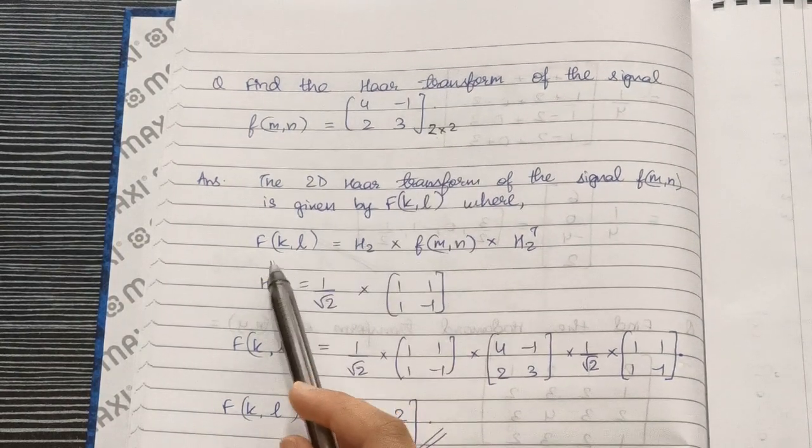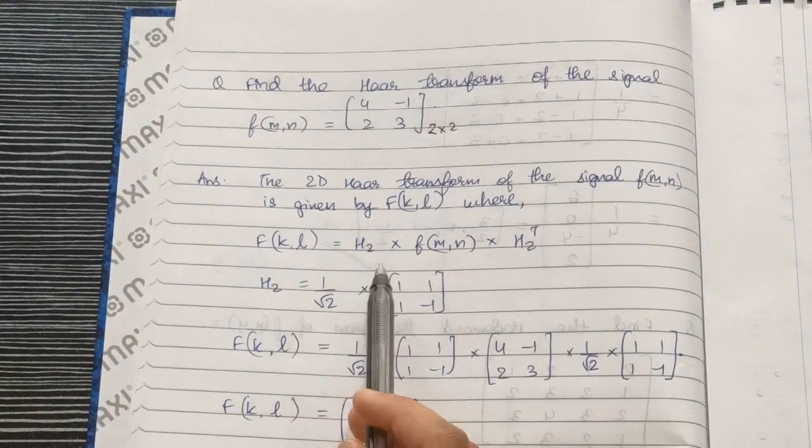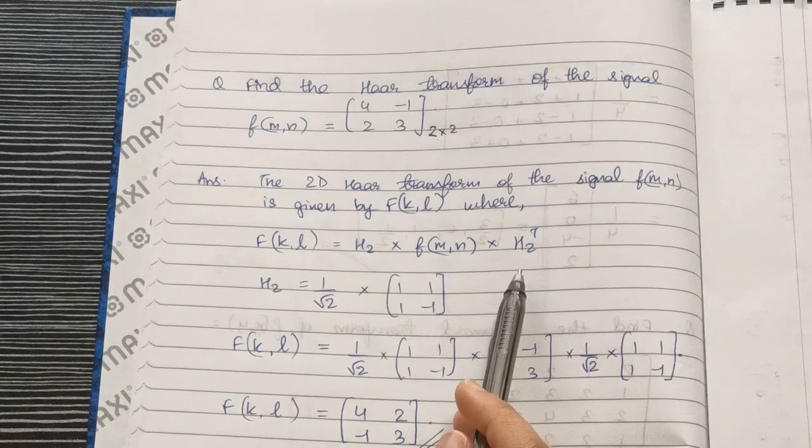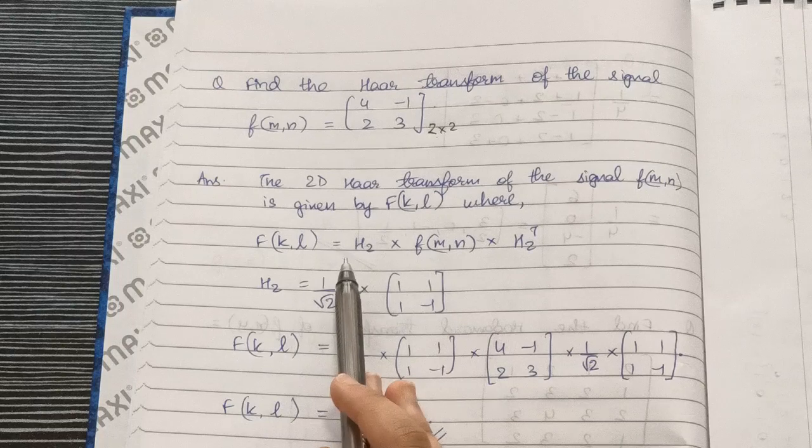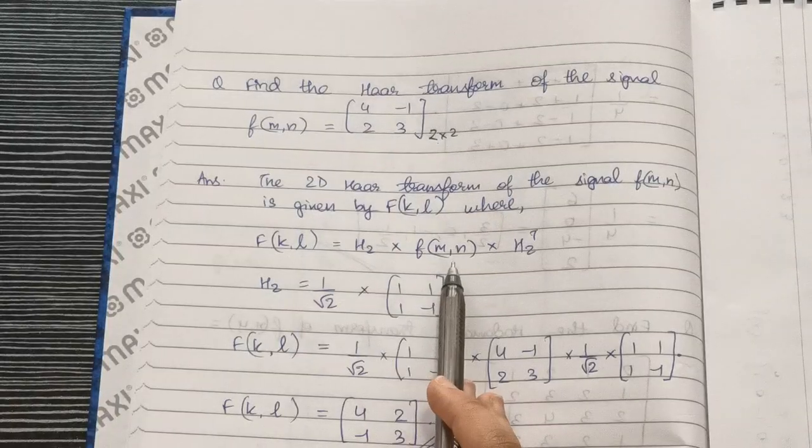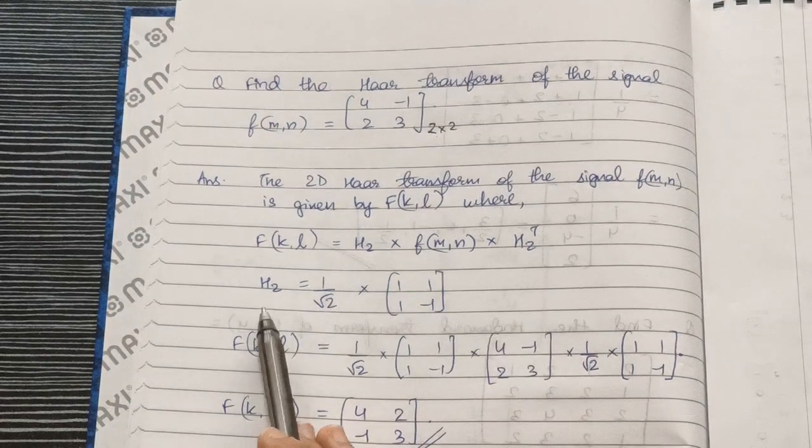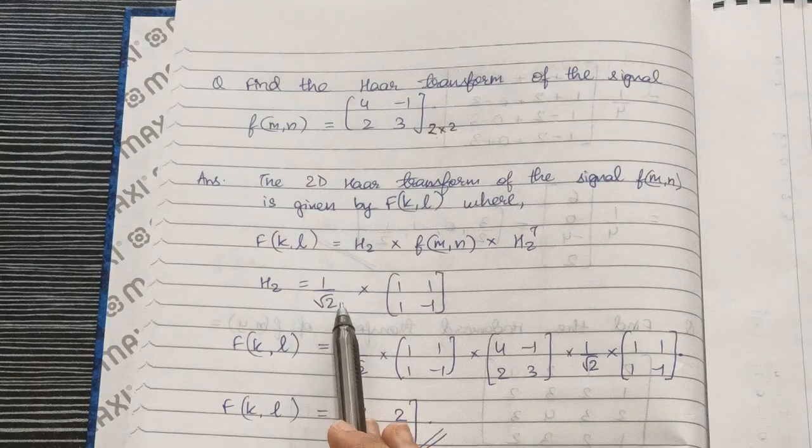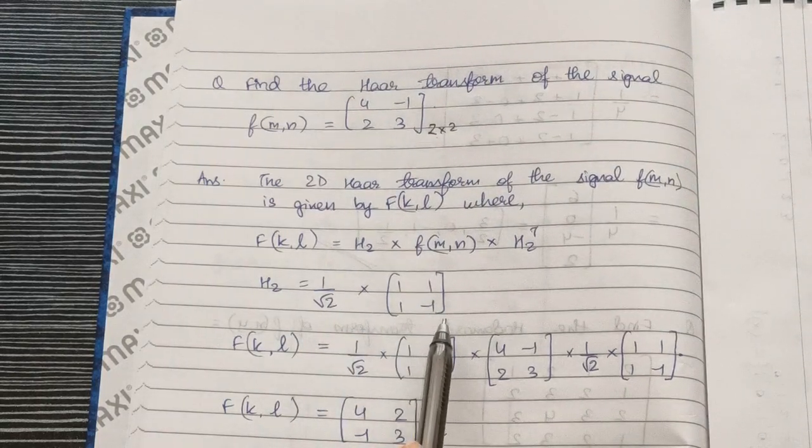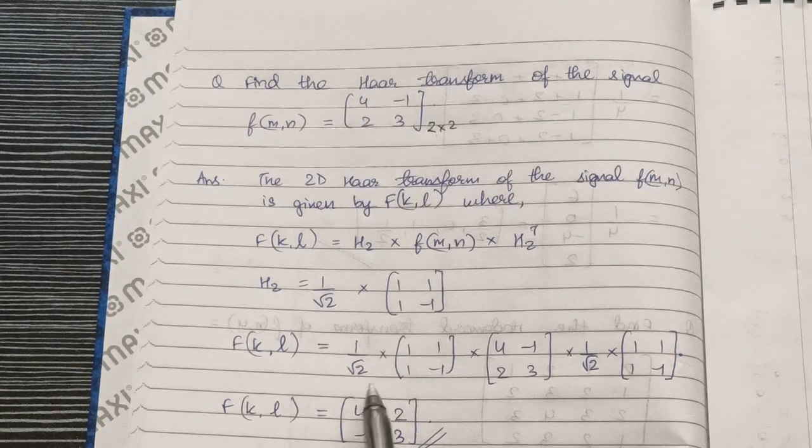That's why the formula we'll be using will be H₂ × input image × H₂^T. As we have been doing with DCT and DFT as well, we'll be using the same formula but with Haar basis. So H₂ is (1/√2)[[1,1],[1,-1]], so our function becomes Haar basis × input image × transpose of Haar basis.